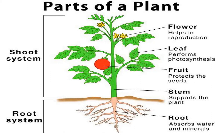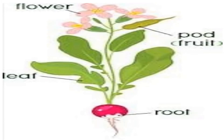Students, the last part of the plant is flower. Do you know what a flower does? Flower helps in reproduction — that means a flower forms into a fruit. Students, if I gave you a plant's leaf, root, stem and flower to eat, would you eat them?